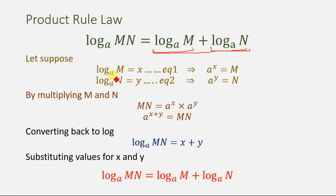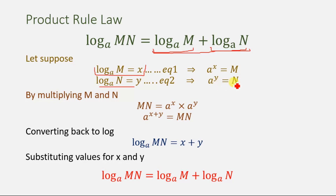Let's suppose log base a of m equals x and log base a of n equals y. Converting these to simple exponential form, we get a to the power x equals m, and a to the power y equals n. So we have two equations: m equals a to the power x, and n equals a to the power y. Now we are going to multiply these two equations, giving us mn equals a to the power x multiplied by a to the power y.